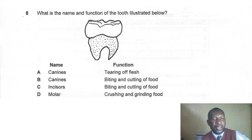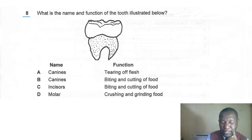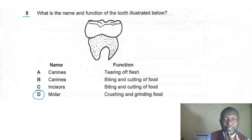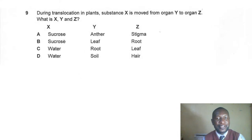Question eight: what is the name and function of the tooth illustrated? Is it canines for tearing flesh, incisors for biting and cutting, or molars for crushing and grinding? The correct answer is D — molar. It is large, flat, has cusps and two roots, and its function is to crush and grind food.